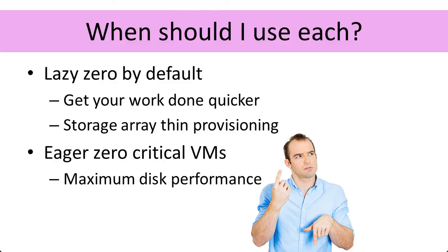Eager zero disks are typically for your critical virtual machines where disk performance in operation is really important — where that penalty on writing into empty space is unacceptable. If you think about something like a database server that has a logs volume, there's a whole heap of sequential writes that go out into the log volume because of the way logs work, writing out into empty space all of the time. If we're doubling the IO, we're getting half the performance of the underlying disk system for those writes into empty space. That could be an impact for our database server, and also for the data volume as it ingests a lot of data and grows its database file into new blocks.